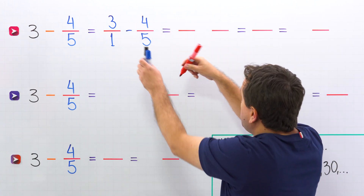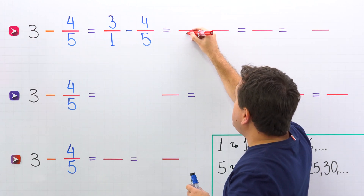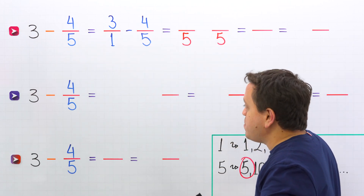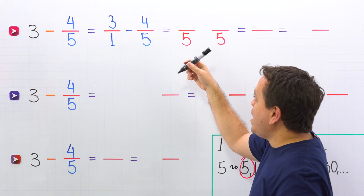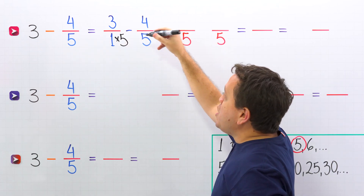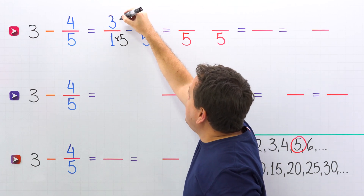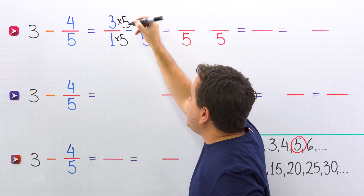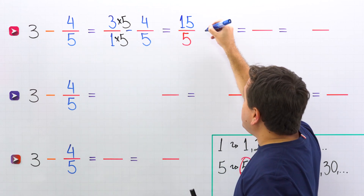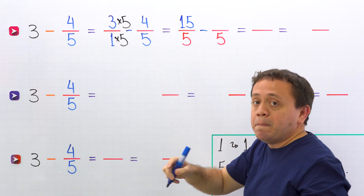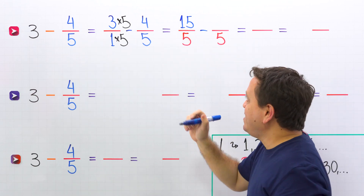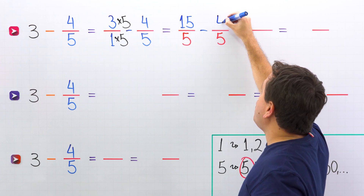Now, for each fraction, we need an equivalent fraction with a denominator of 5. Let's start with 3 over 1. By what number should we multiply 1 to get 5? By 5, because 1 times 5 equals 5. Whatever we do to the bottom, we must do to the top. And 3 times 5 gives us 15. Then we have the minus sign, and we continue with the fraction 4 fifths. But hold on — this fraction already has a denominator of 5, so we don't need to make any changes. We just put the same fraction, 4 fifths.